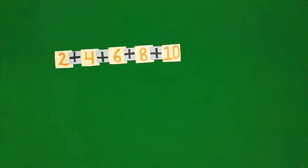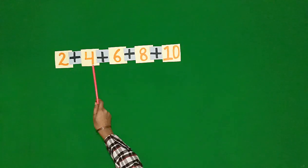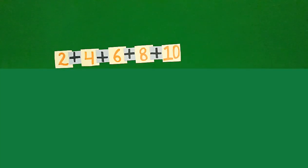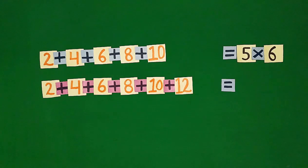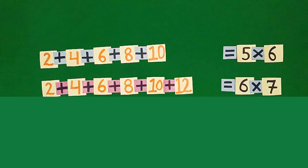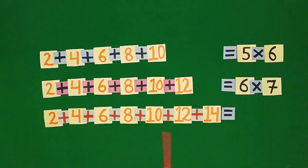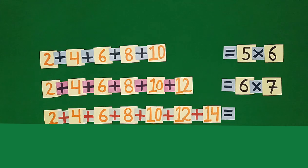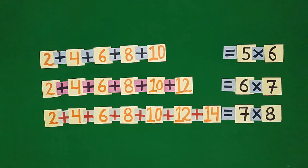Students, you have learned to add even numbers. Now we will learn to complete the patterns of even numbers. Here we have the first five even numbers — the sum of the first five even numbers is equal to 5 multiply 6. Here we have the first six even numbers — the sum of the first six even numbers is equal to 6 multiply 7. Here we have the first seven even numbers — the sum of the first seven even numbers is equal to 7 multiply 8. Thus, this pattern grows in this manner.